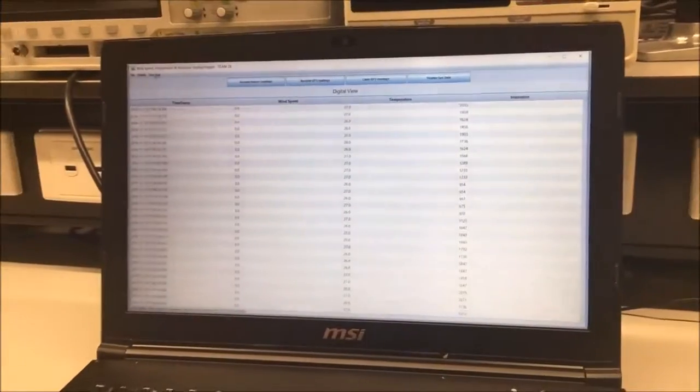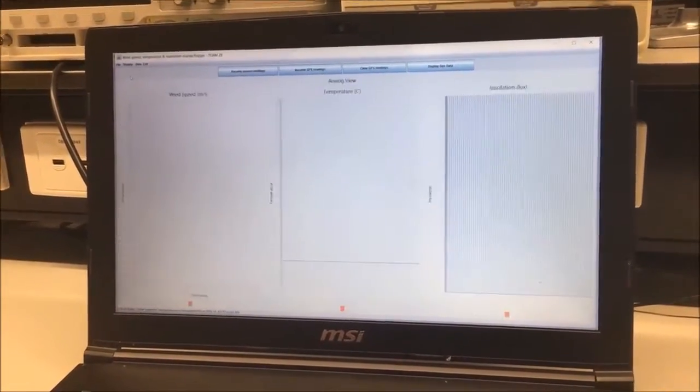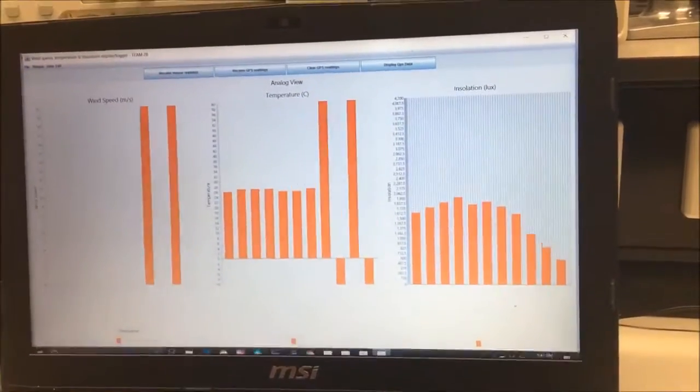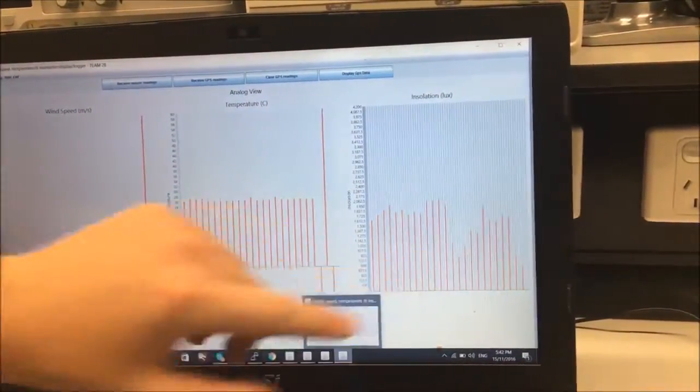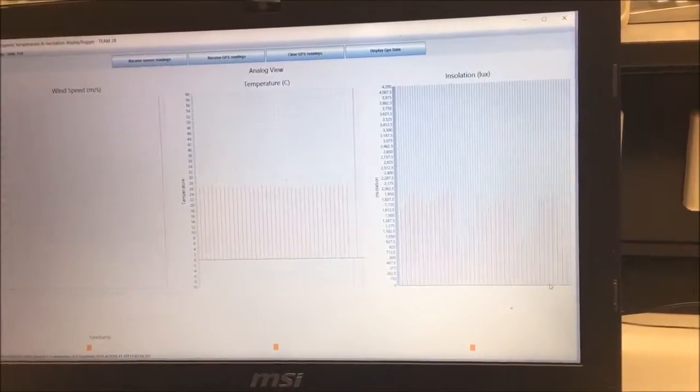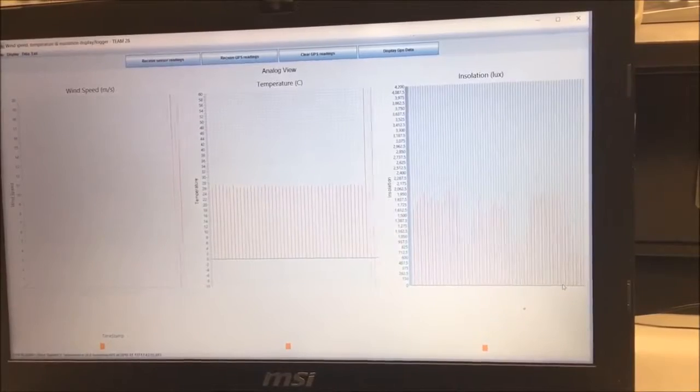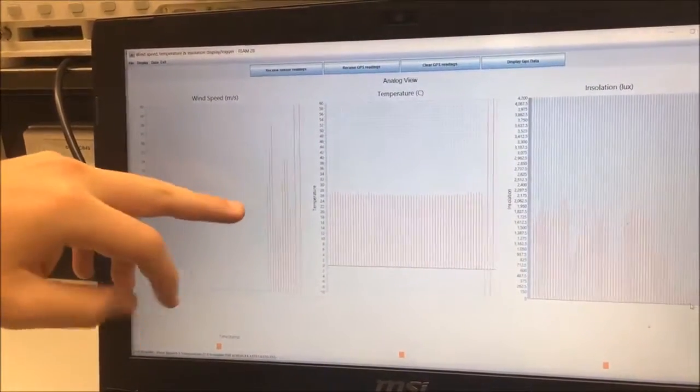Cool. So we've got graph readings as well of this data. This is just a digital display, and we've got an analog display of the data here too. Here we've got wind speed, temperature. You can see temperature is pretty constant. Light's varying because of my elbows hovering over the lux meter. But if I blow on the wind speed like before, you can see some peaks here.